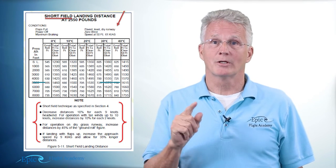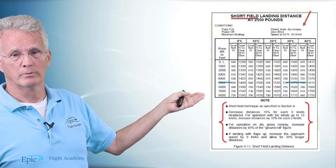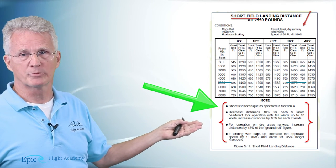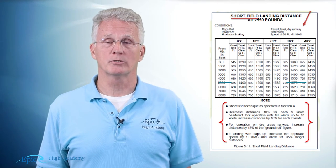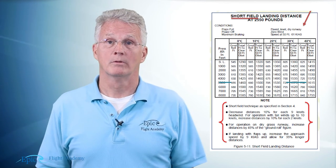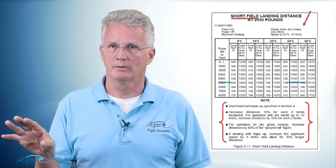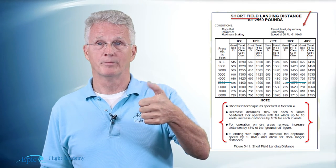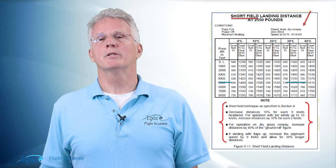But remember we said take a look at notes and conditions, always, always, always. Again, look at our notes and conditions: full flaps, power off, maximum braking, and in the notes I see short field technique from section 4, etc. What if I'm not in compliance with all those notes and conditions? Will these landing distances apply? No. Now I've got the safety factor of calculating this at gross weight, but I still am going to use my old aviation rule of thumb. I'm going to multiply this by 150 percent.